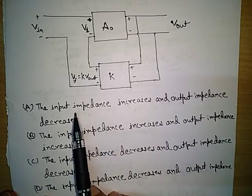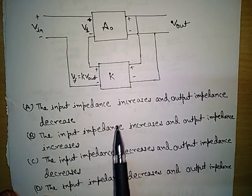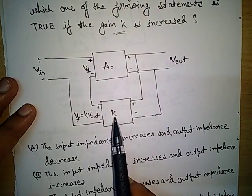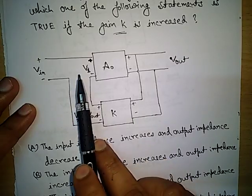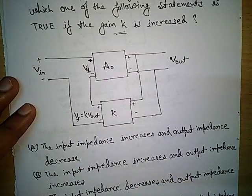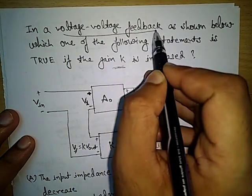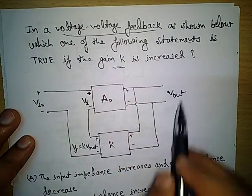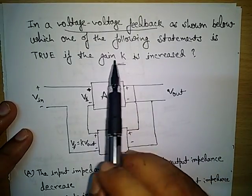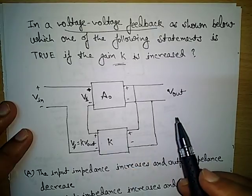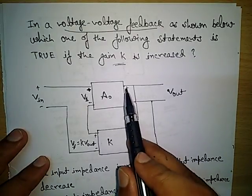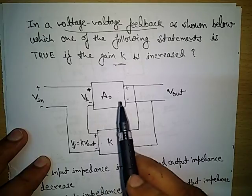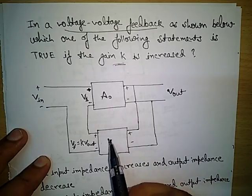Different combinations are given — sometimes input impedance increases, output impedance decreases, and so on. We have to determine how the feedback factor K affects the input impedance and output impedance, whether it increases or decreases with the value of K. First we will learn the different nomenclature of feedback amplifiers, then whether it is positive or negative feedback, and then the parameters affected by K.